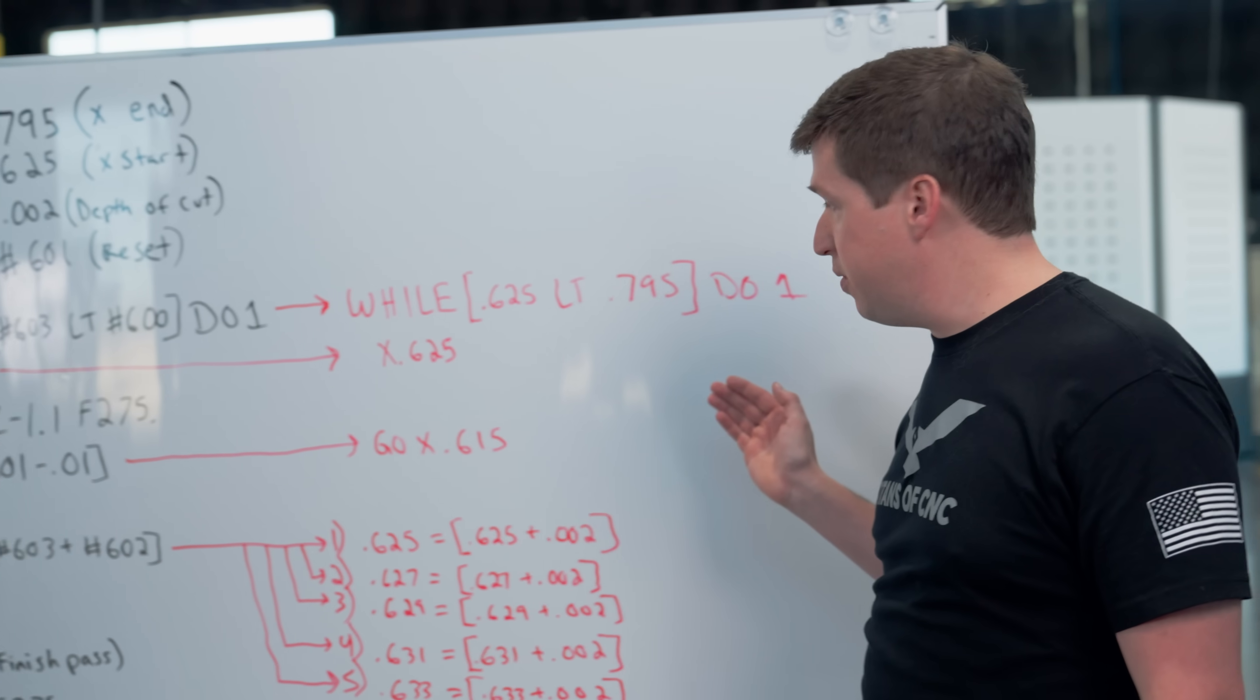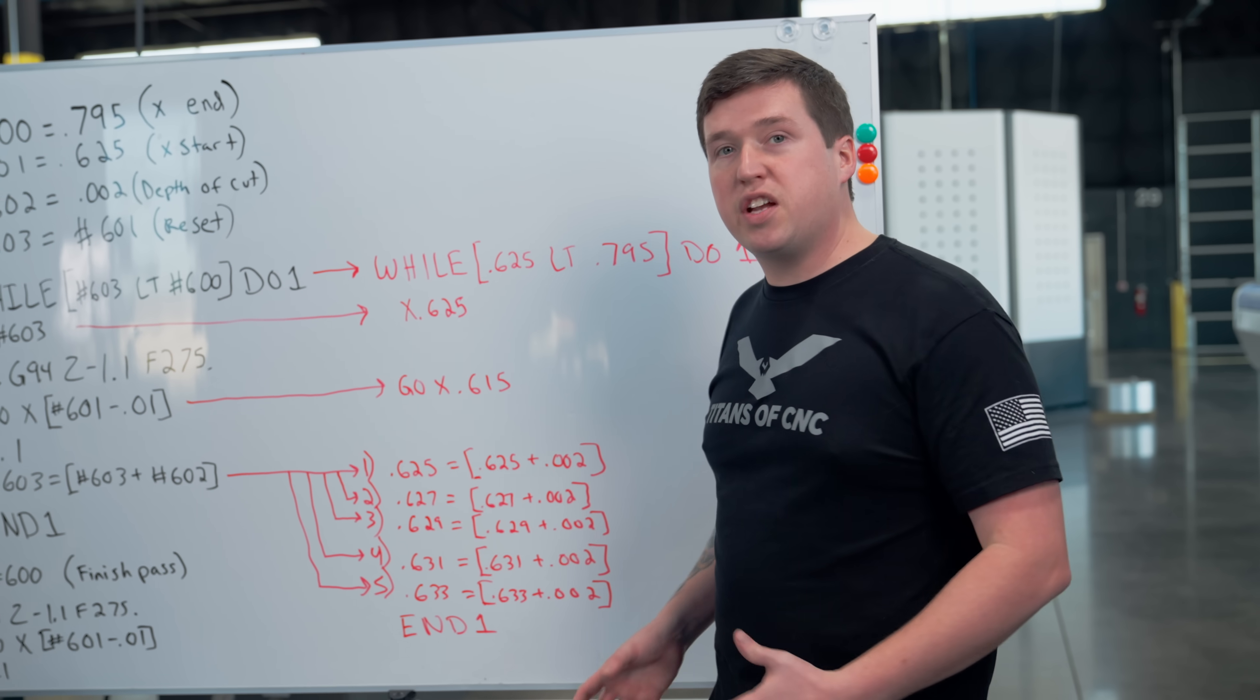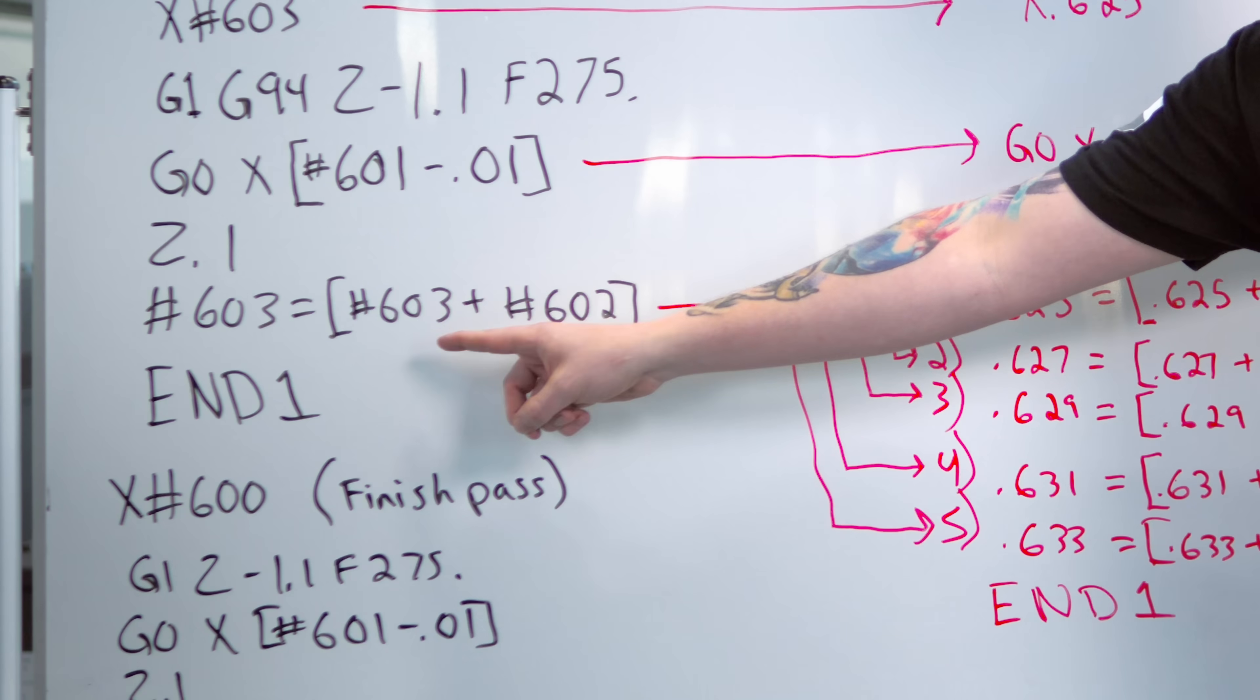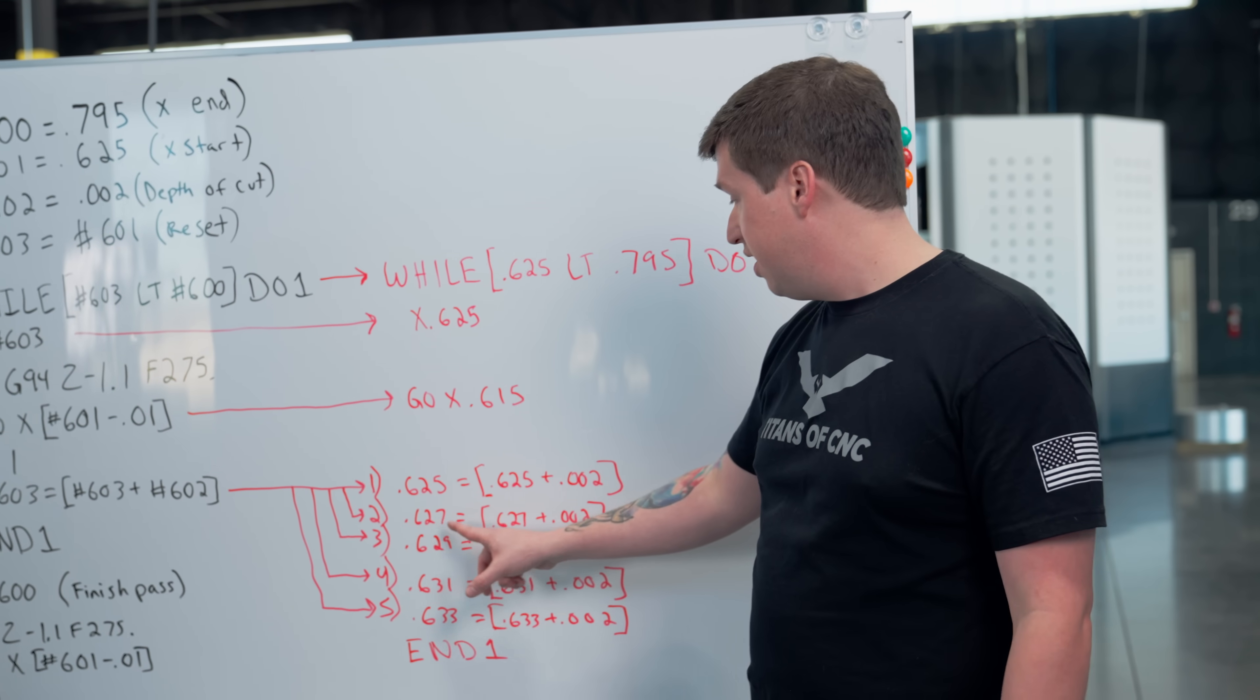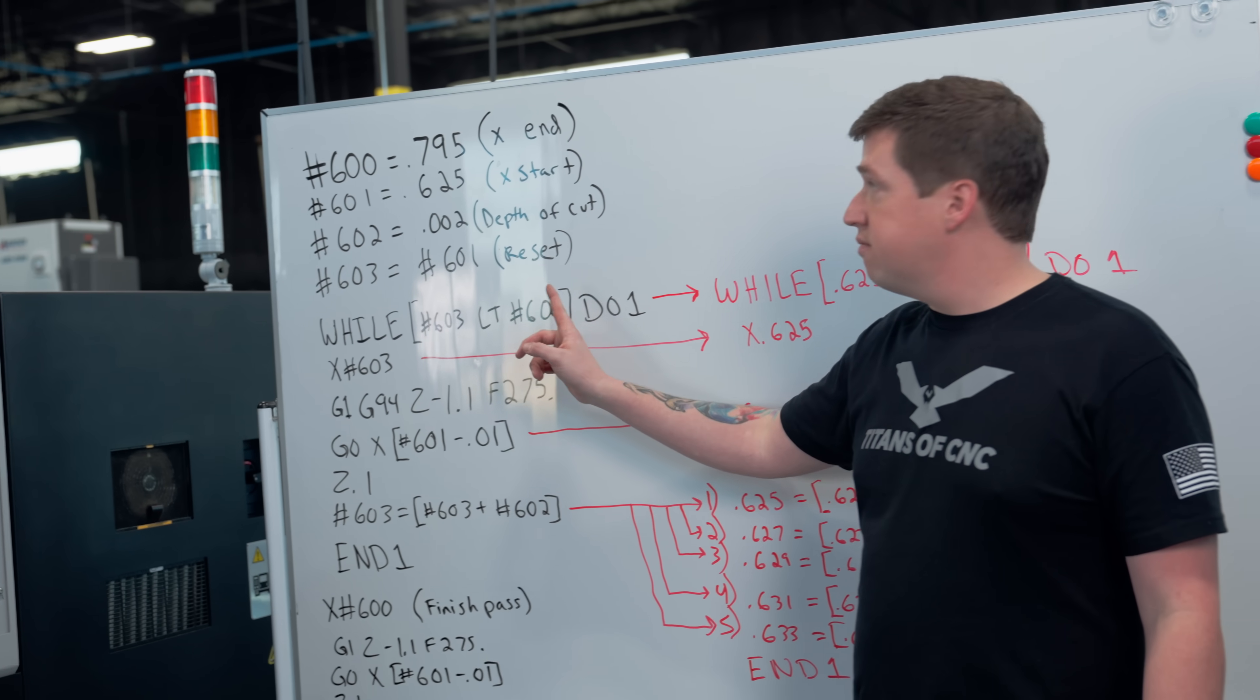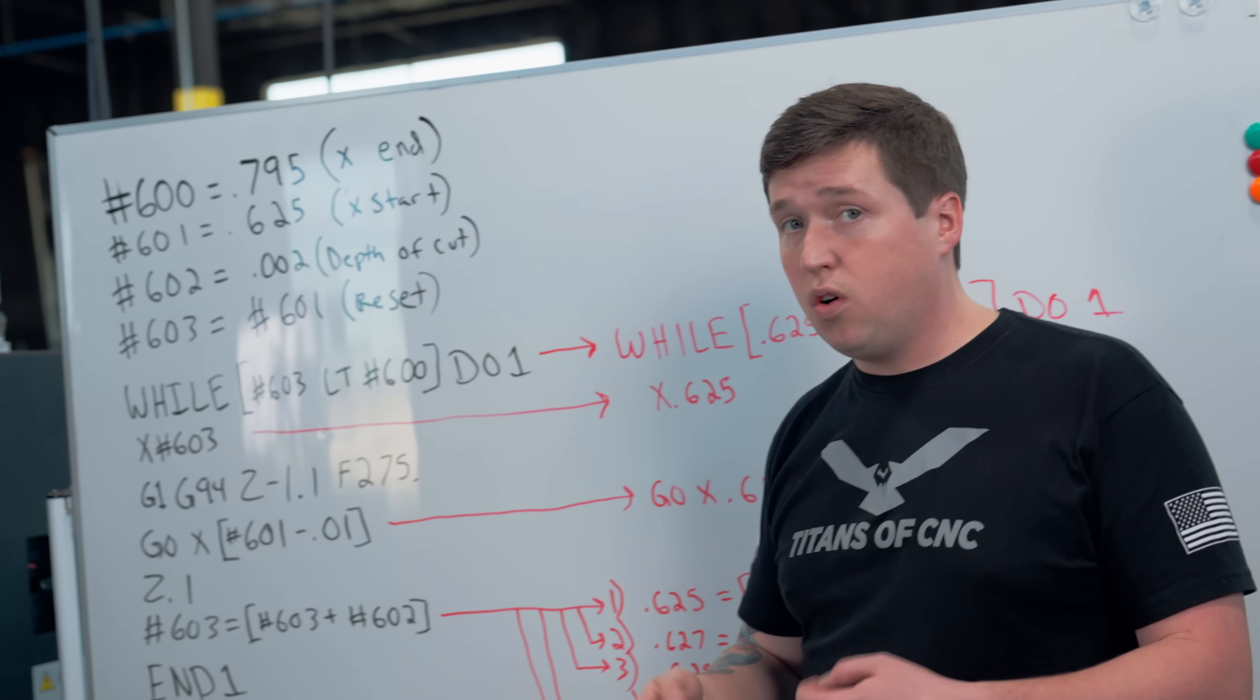Here's the while statement. Over here to make things simpler, I wrote everything out in red without any pound variables. The first time this runs, it's going to equal 625. At the end it's going to say 625 equals itself plus 0.002, so it's going to count all the way up until it is either greater than or equal to 795. So it is going to say while 603 is less than 600. Once 603 becomes either equal or greater, this D01 will jump right down to this END1.